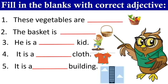Fill in the blanks with the correct adjective. First one: these vegetables are blank. Look at those vegetables in the basket — the vegetables are fresh. So let's write the word fresh. Second one: the basket is blank. You can see the basket, and the basket is empty.